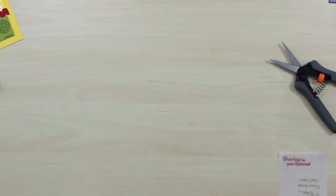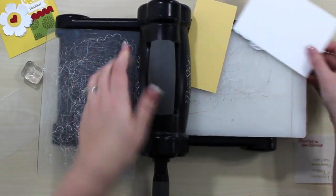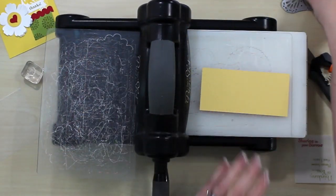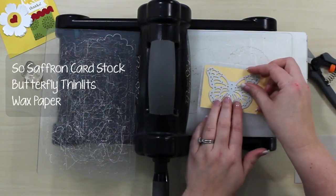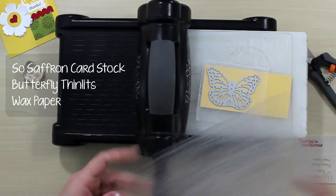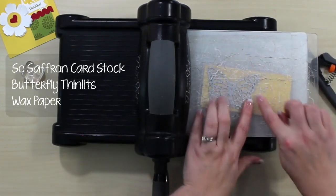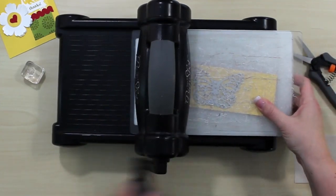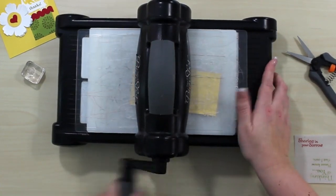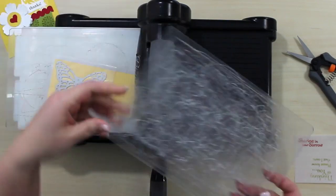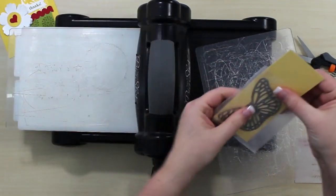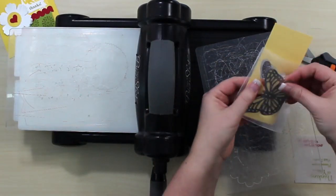I'm going to use the multipurpose platform to begin. Now I've got it slipped over and I'm going to use the butterfly thinlets and a piece of wax paper in between. So when you use the wax paper in between getting the pieces, because this one has all these little intricate cuts, getting the little trash pieces out is so much easier. So I'm just going to run that through and then pop out my butterfly.